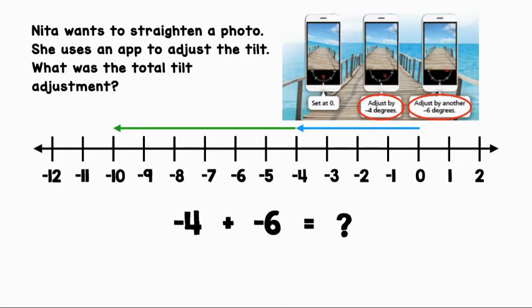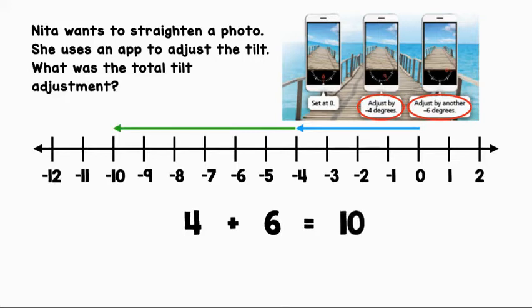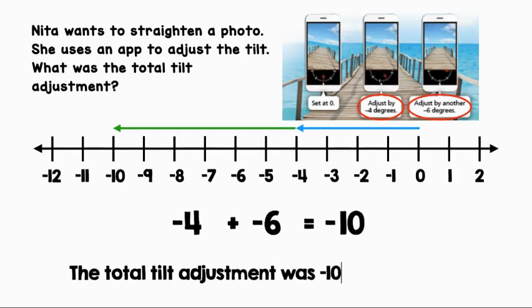Let's use our rules for adding negative integers to solve this expression. The first step is to find the sum of the absolute values: 4 plus 6 equals 10. The next step is to use the same sign as the addends. In the original expression, they were both negative, so our sum is negative 10. The total tilt adjustment was negative 10 degrees.